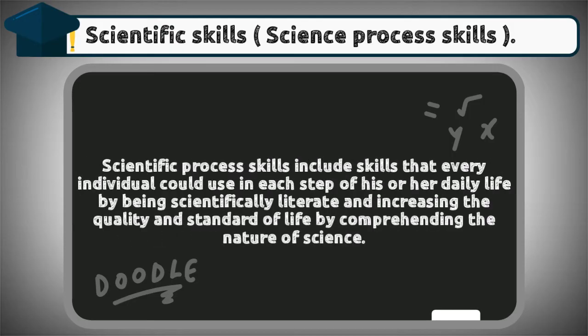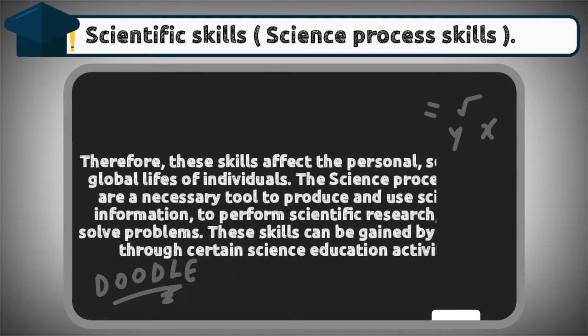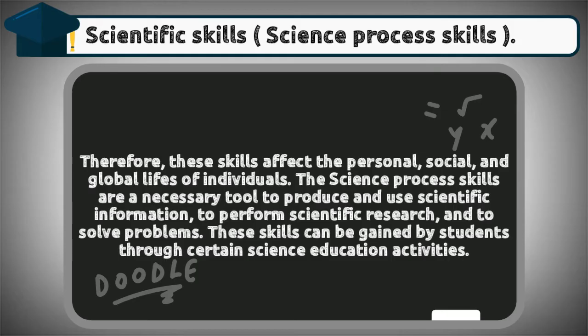Scientific process skills include skills that every individual could use in each step of his or her daily life. By being scientifically literate and increasing the quality and standard of life by comprehending the nature of science, these skills affect the personal, social, and global lives of individuals. The science process skills are a necessary tool to produce and use scientific information, to perform scientific research, and to solve problems. These skills can be gained by students through certain science education activities.